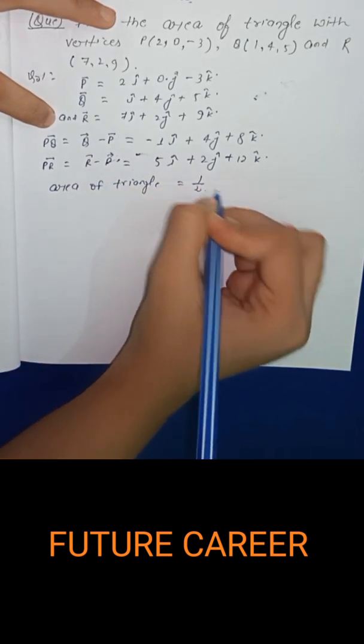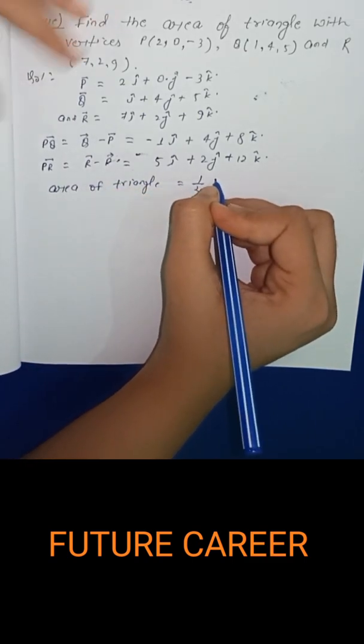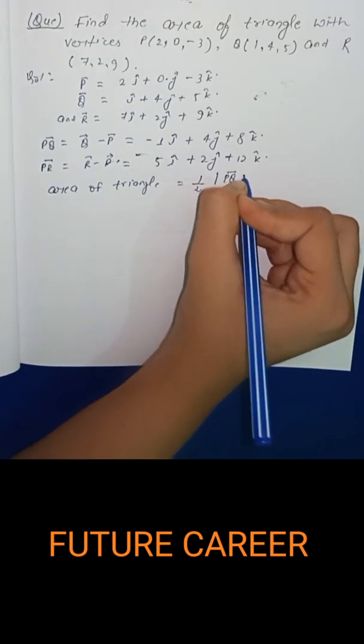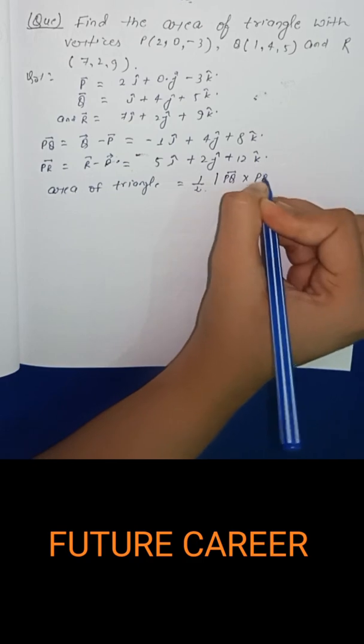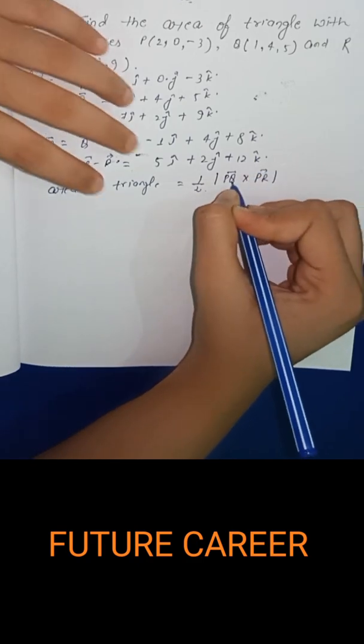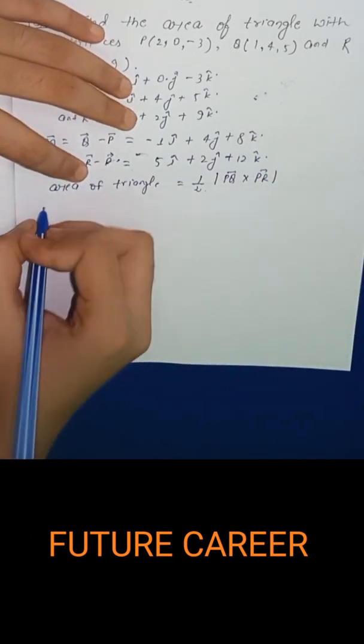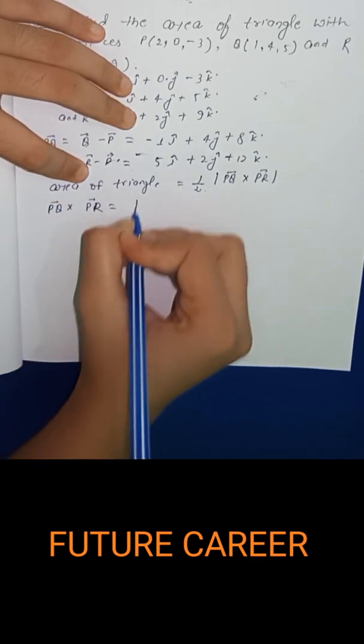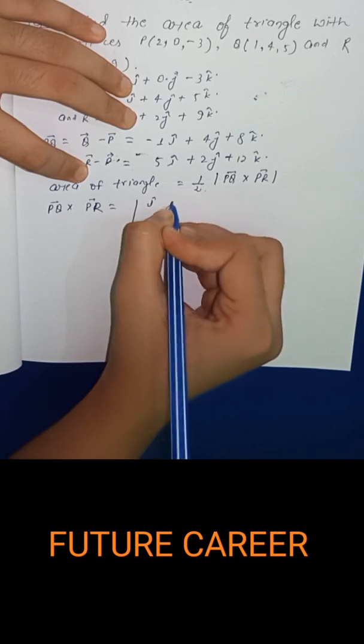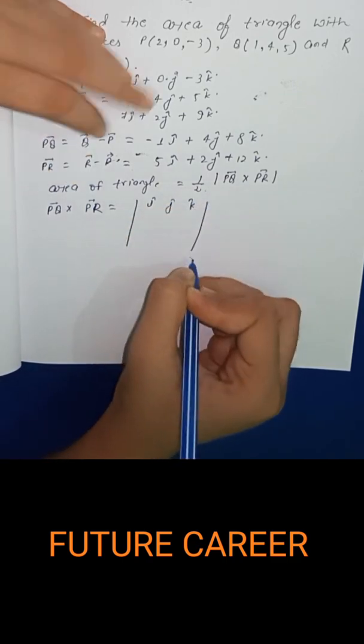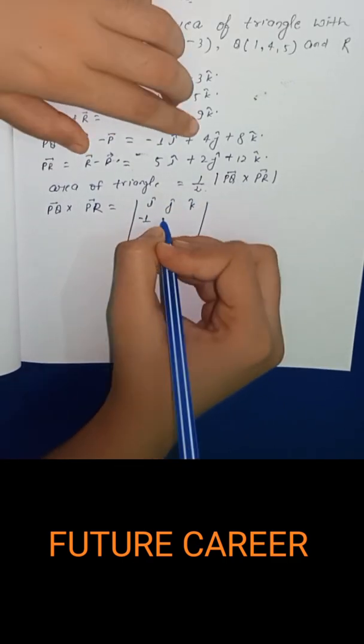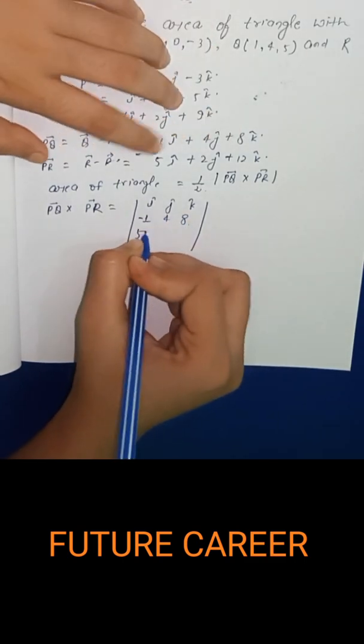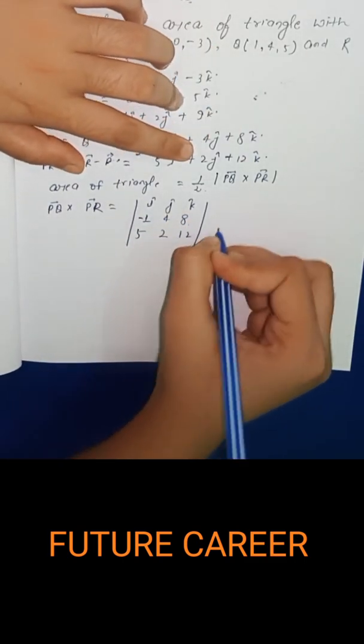Now for area of triangle, area of triangle equals to half into mod of PQ vector cross PR vector. Now we have to find PQ cross PR. So PQ vector cross PR vector equals to i cap j cap k cap, minus 1, 4, 8, 5, 2, 12.